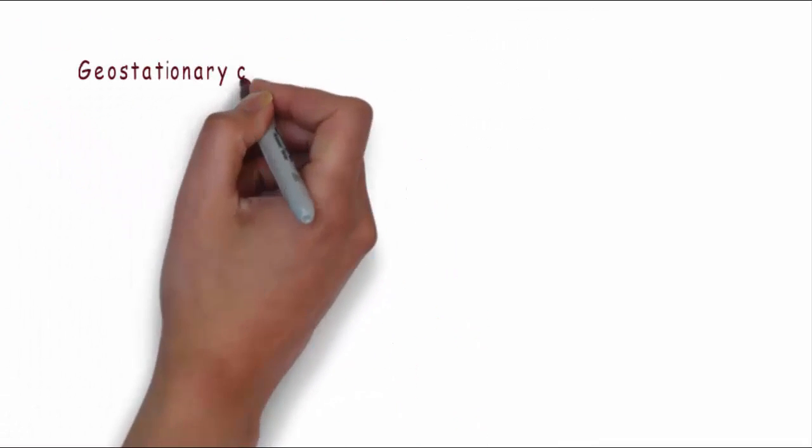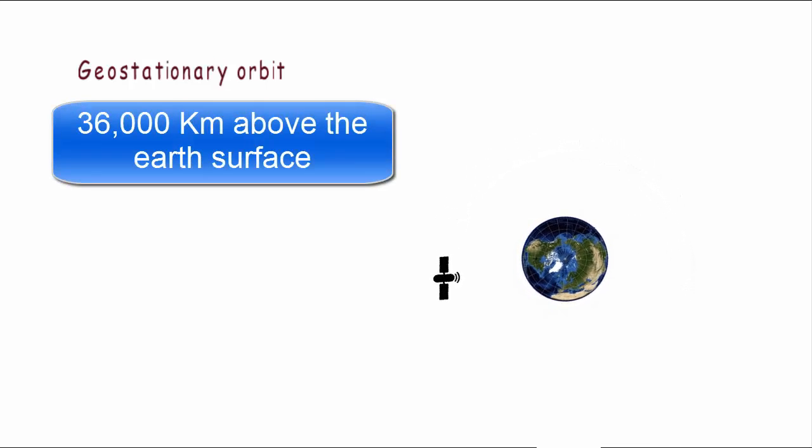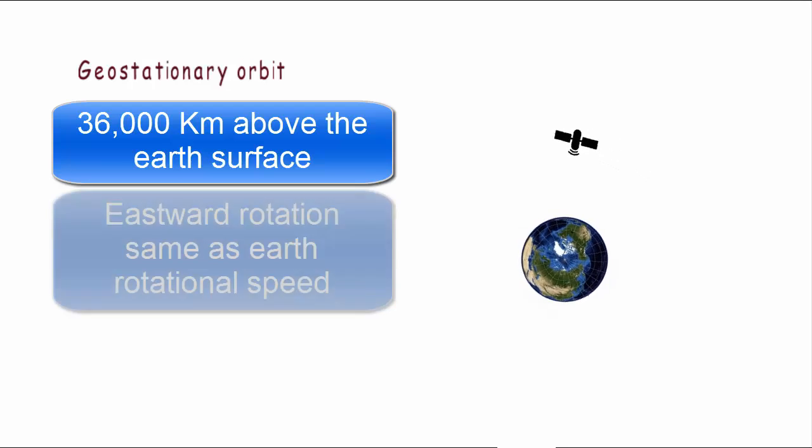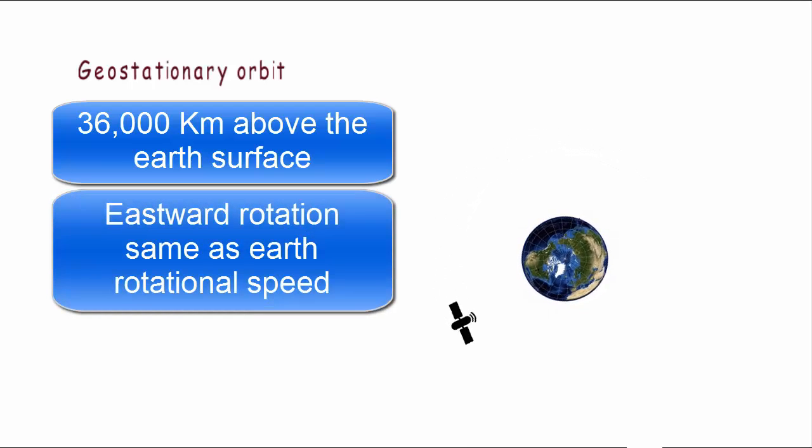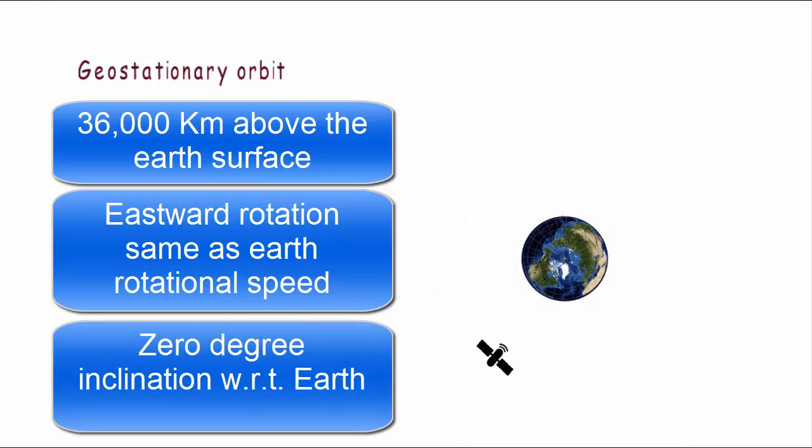There is a special orbit called geostationary orbit, which is a geosynchronous orbit but with some different properties. That is, the satellite remains stationary with respect to a point on earth. There are three conditions for a satellite to be placed in geostationary orbit. The first one is the satellite should be placed about 36,000 km above the earth's surface and move in circular orbit. The second condition is that the satellite must travel eastwards with rotational speed equal to earth's rotational speed. And the third condition is that the inclination of the satellite with respect to earth must be 0 degree.